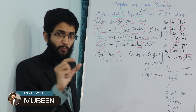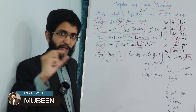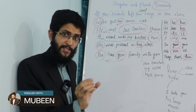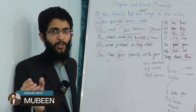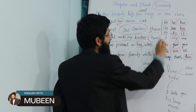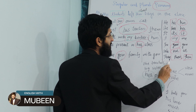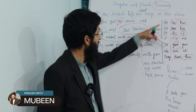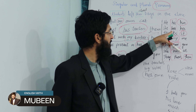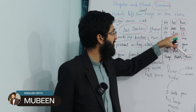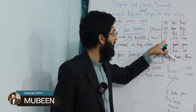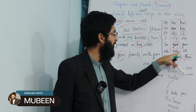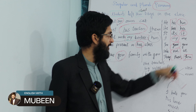His brother — just like 'big' is modifying 'brother' in 'big brother,' 'his' is modifying the word 'brother.' The first column contains simple subjects and the third column contains objects: he, his, him; she, her, her; it, its, it; I, my, me; you, your, you; we, our, us; they, their, them.